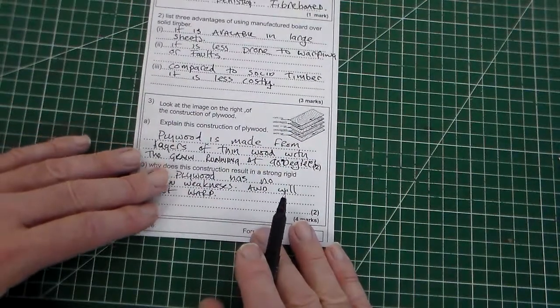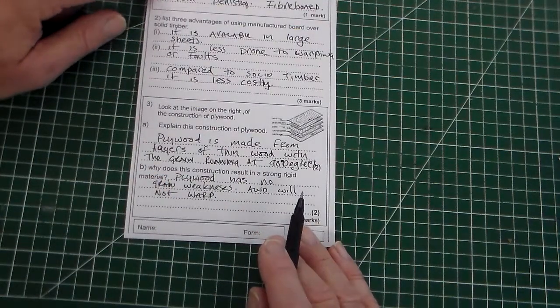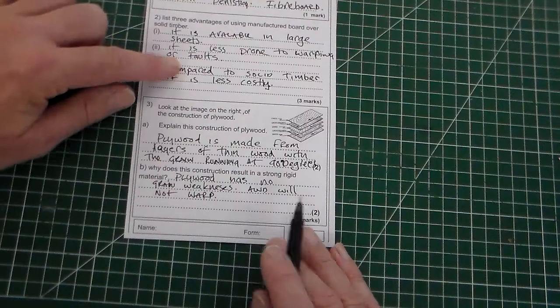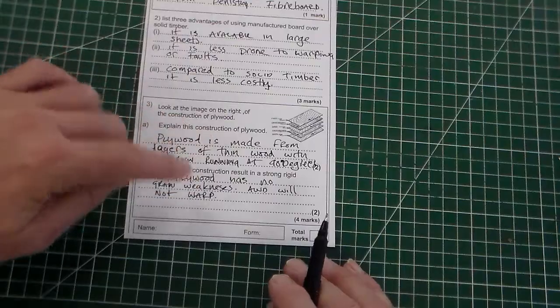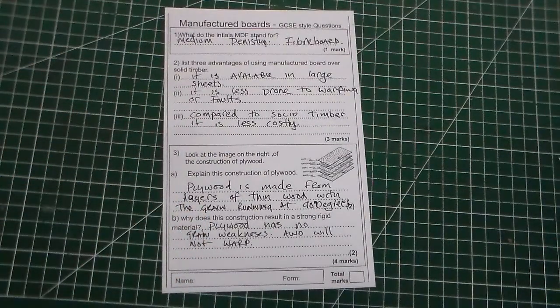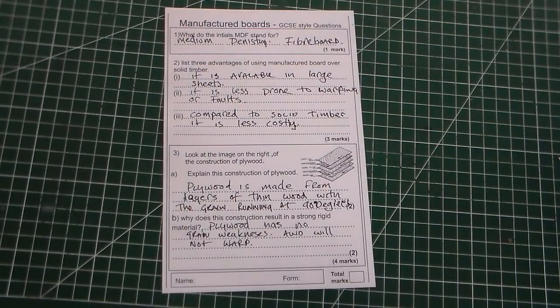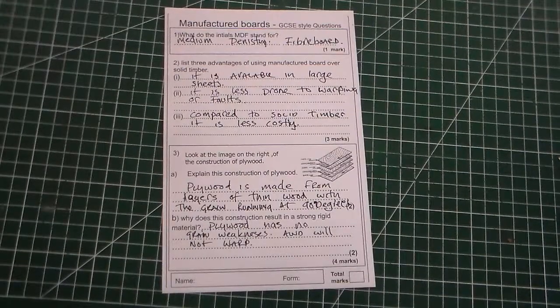So, there it is, there's manufactured board, GCSE style questions, one mark there, three marks there, one, two, three, we've got, what was that, two marks for that, and two marks for that, so, there it is, I'll leave it there, and that is manufactured board, GCSE style questions. Thank you for watching Mr. Ridley's design and technology.